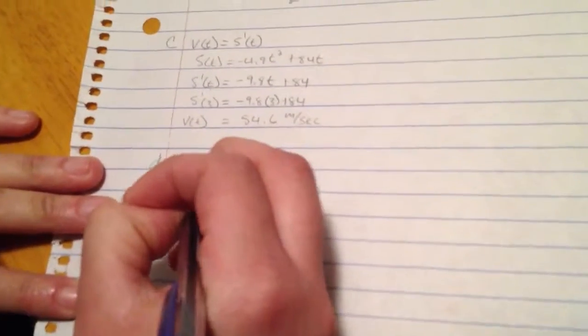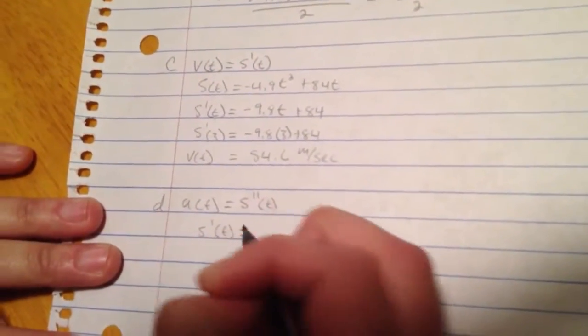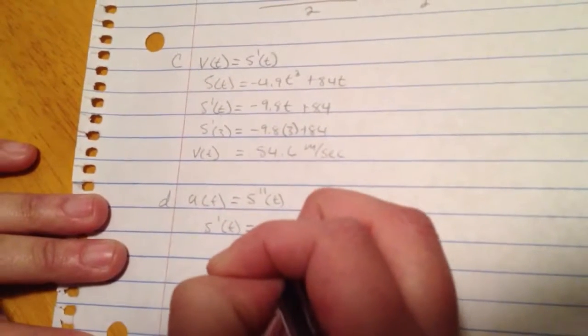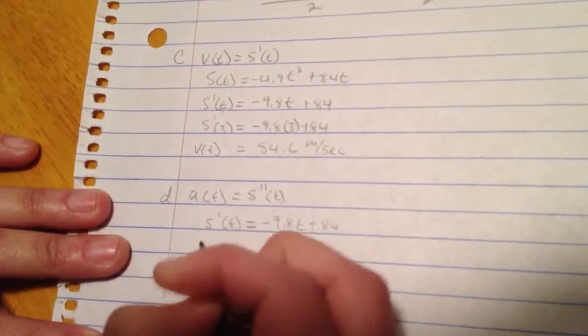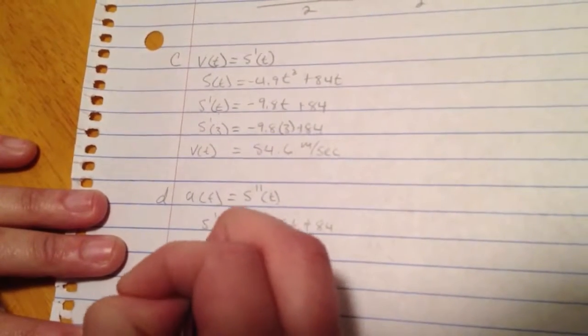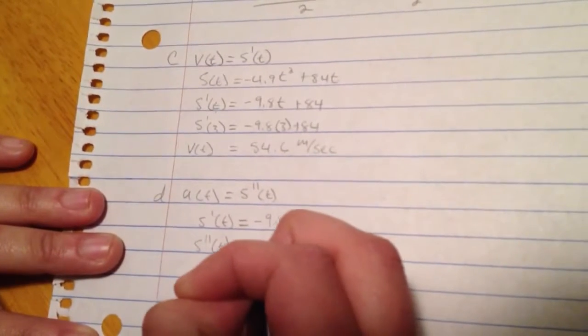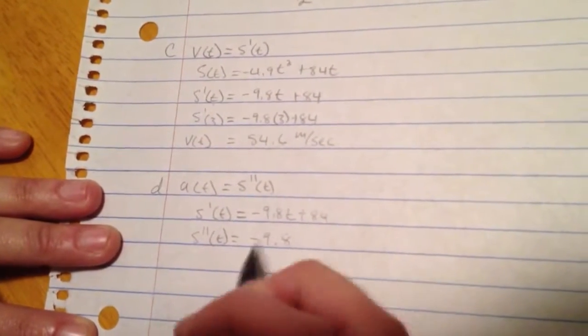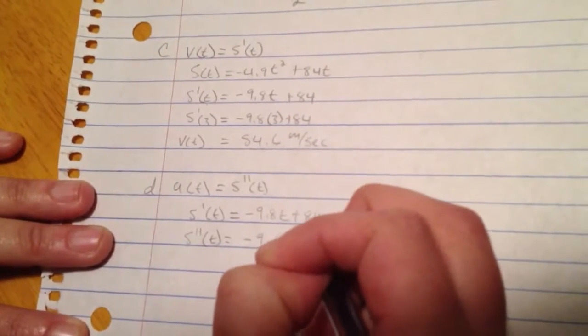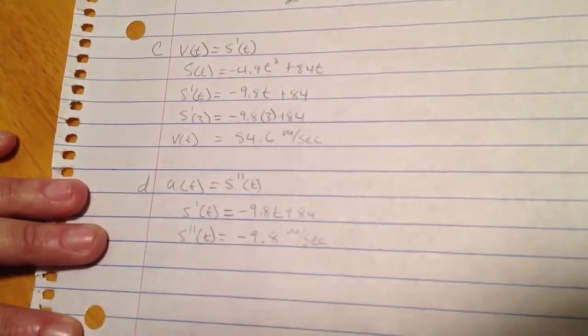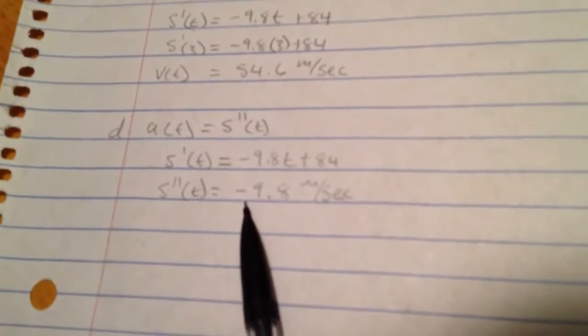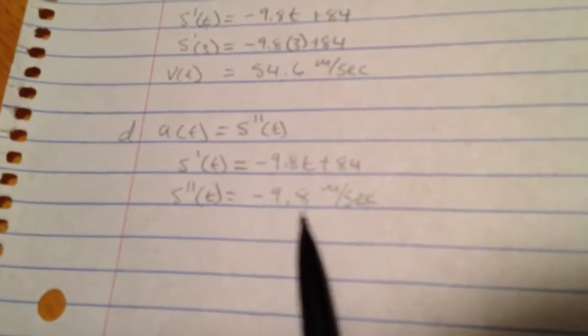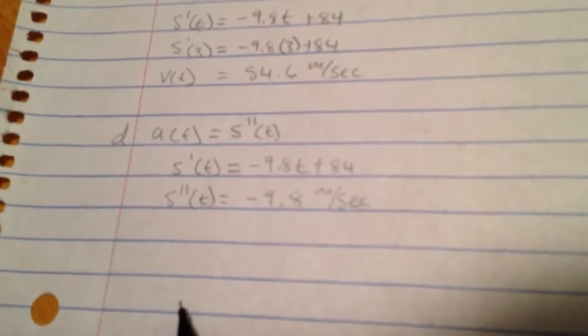So we already know that s prime of t equals negative 9.8t plus 84. So when we take the derivative of our derivative, s double prime of t equals just negative 9.8. And this will be meters per second squared. So no matter what numbers you're given, no matter what t is, your acceleration is always going to be either negative 9.8 or if you're dealing with feet, negative 32 feet per second squared. And there you go.